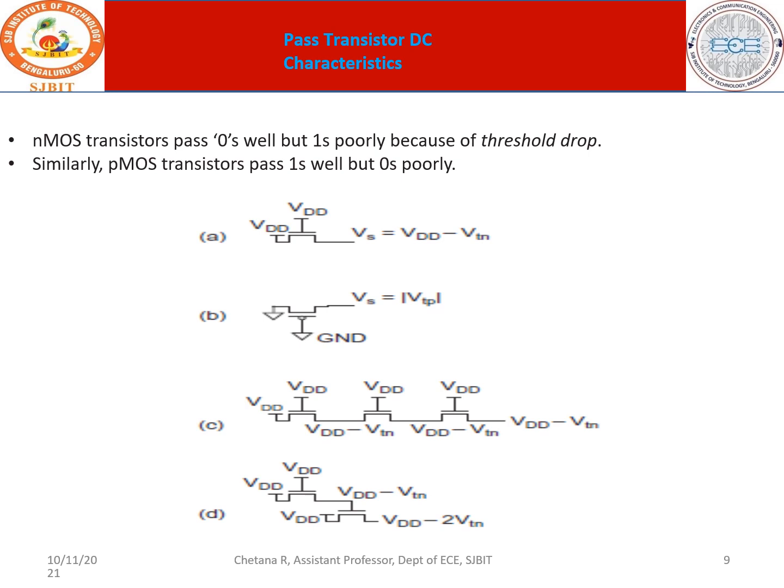Now consider the cascaded NMOS structure. You have a source, a drain connected to the source of the next stage, and so on. In one diagram, the gate of the next stage is connected to the drain of the previous stage.